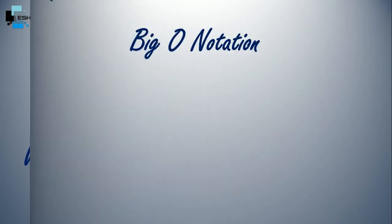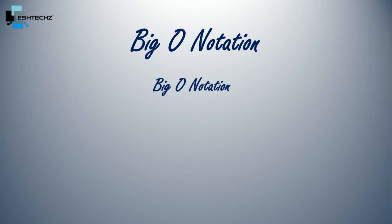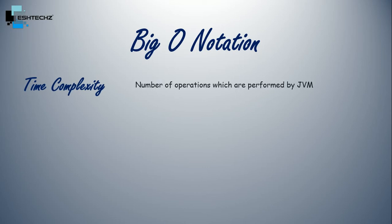Now first let's take a look at Big O notation. So Big O notation comes into the picture whenever we talk about time complexity. In our previous tutorial, we learned that Big O notation or time complexity is the number of operations which are performed by JVM.